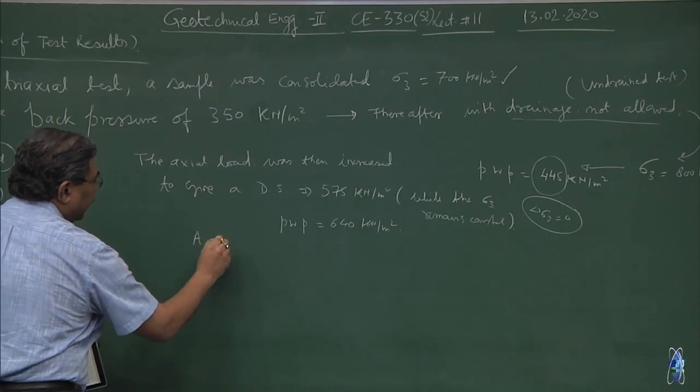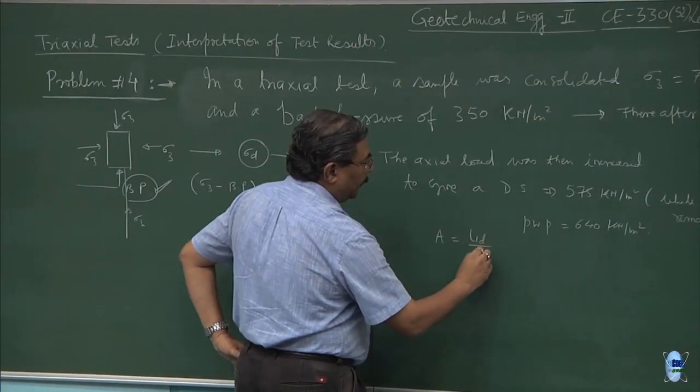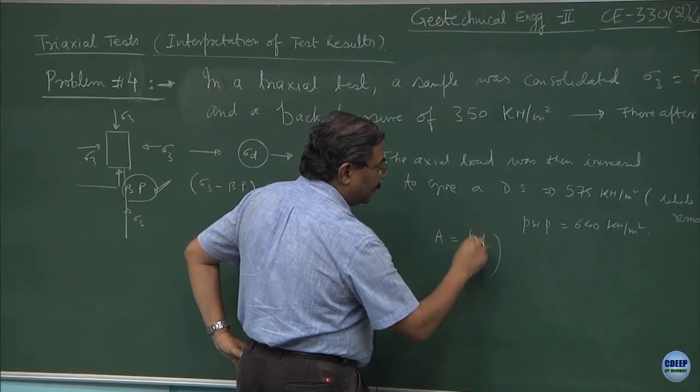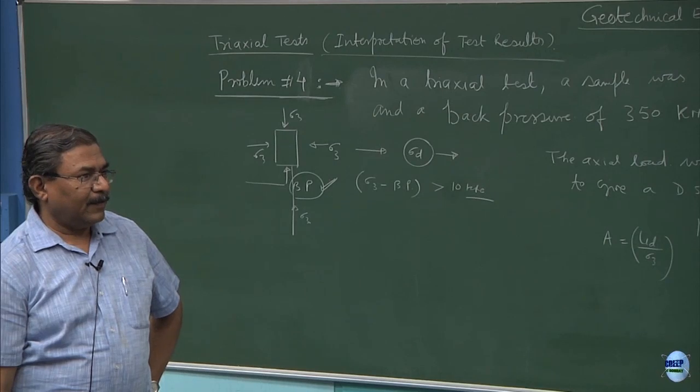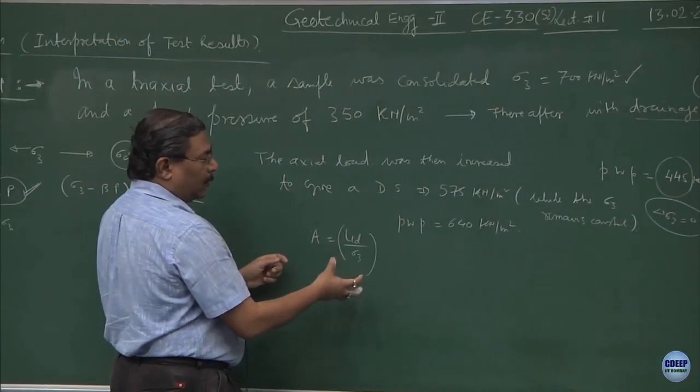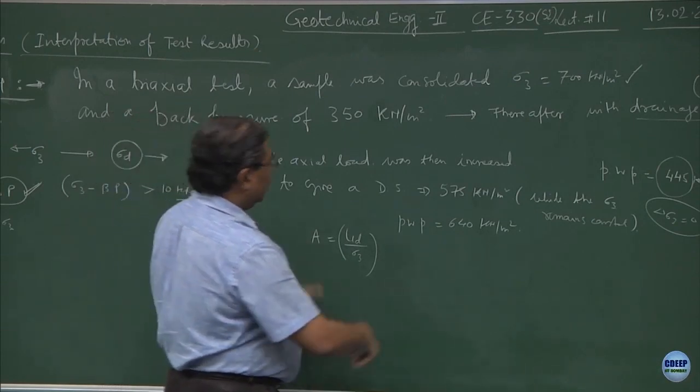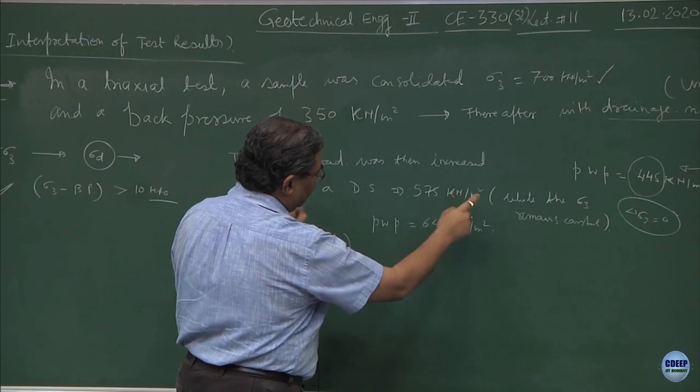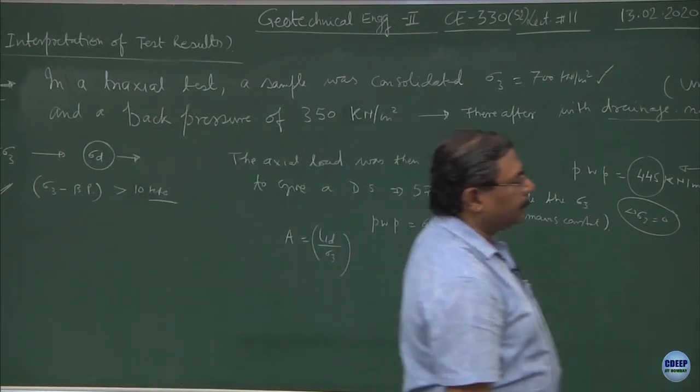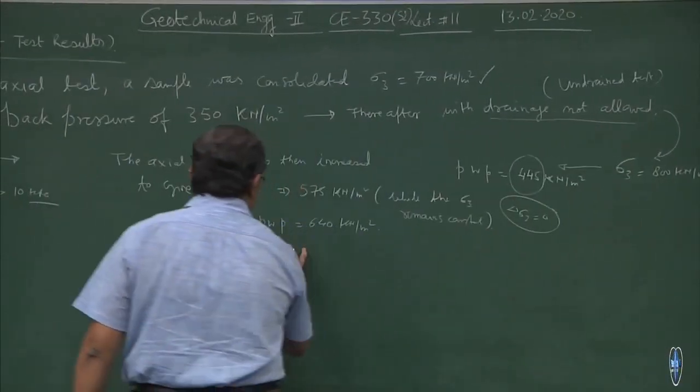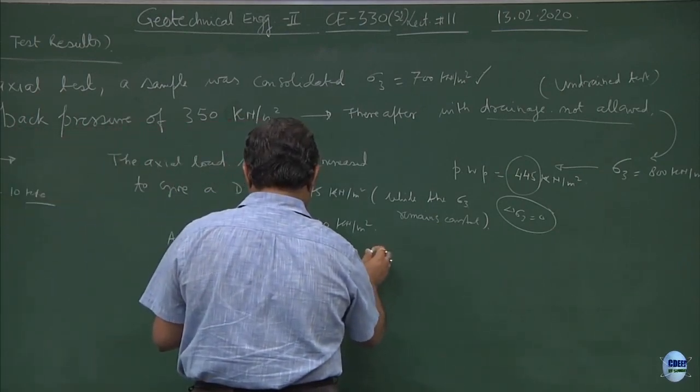We define the term parameter A and A was the response of the material to Ud upon the system. This is the efficiency factor how much sigma 3 you are changing and what type of pore pressure develops in the system during undrained shearing. The axial load was increased to give a ds of this much and the pore pressure is this much, compute the parameter A. If you do quick computations, you will find the parameter A comes out to be 0.339.